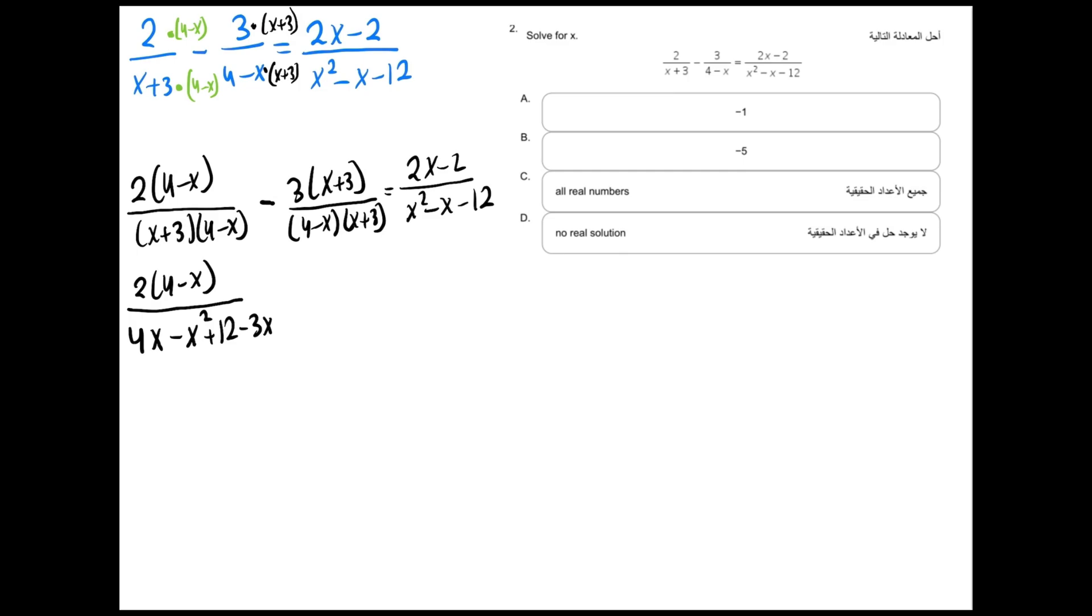Now let's do the other side. We have minus 3 into x plus 3 and the denominator is exactly the same which is 4x minus x squared plus 12, which equals 2x minus 2 over x squared minus x minus 12.